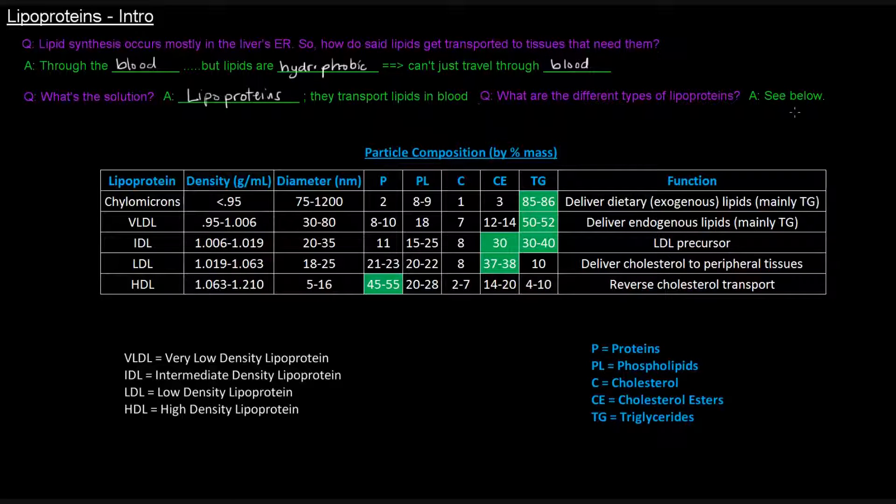So what are the different types of lipoproteins? Well, there's this chart down here. We've got chylomicrons, VLDL which stands for very low-density lipoprotein, IDL intermediate-density lipoprotein, LDL low-density lipoprotein, and HDL high-density lipoprotein.